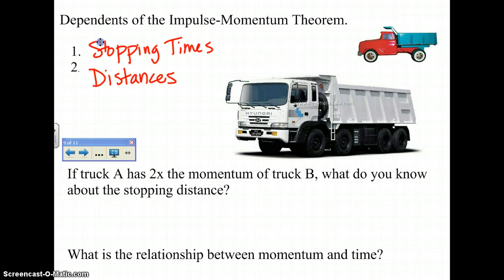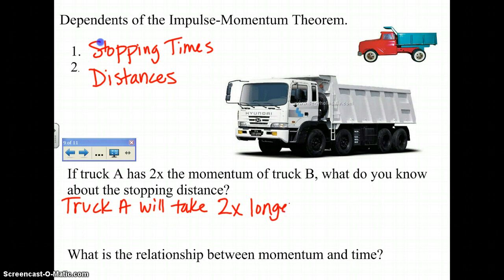Think about the impulse momentum theorem: delta P equals F times delta T. F is constant in this scenario — something has to be constant. Therefore your time, delta T, and your momentum, delta P, are going to be directly related to each other. The more momentum you have, the more time it takes to stop. So more specifically, truck A will take twice as long as truck B to stop.